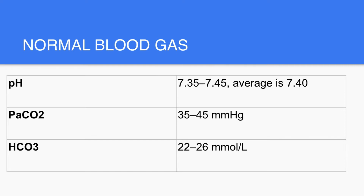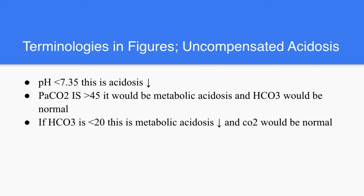If bicarb is less than 22, then this is acidosis, and if more than 26, then this is metabolic alkalosis. In case of uncompensated acidosis, the pH would be low — less than 7.35. It depends on whether it's respiratory, in which case the carbon dioxide would be more than 45, or metabolic, where the bicarb would be less than 22. Since it's uncompensated, the third parameter would be normal. In respiratory acidosis, the bicarb would be normal, and in metabolic acidosis, the carbon dioxide would be normal.